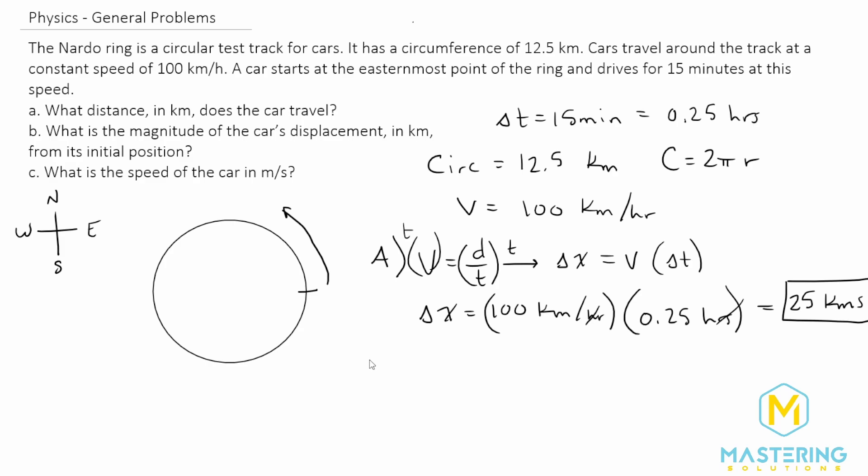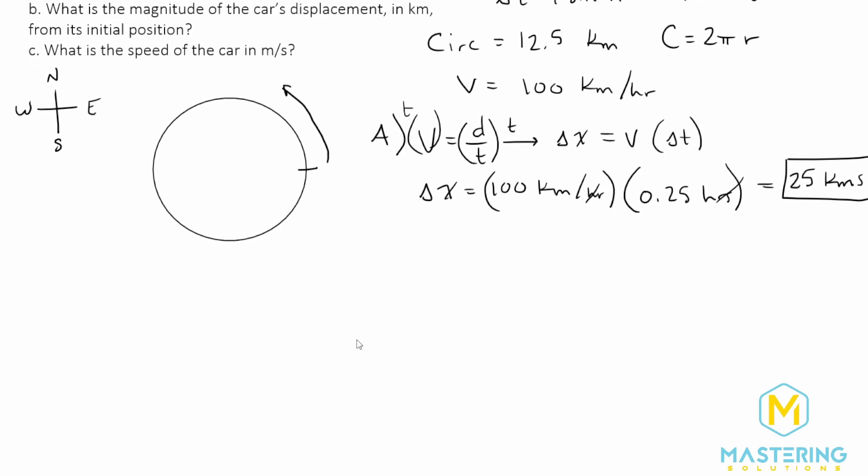So now for part B, they want us to find the displacement in kilometers from the initial position. Displacement, of course, is the difference in a straight line from where you started to where you ended up. To do that, though, we need to figure out where the car ended up. We know it started out right here at the easternmost point. So we know that the car went 25 kilometers. To figure out how far that is, we have to compare it to the circumference.